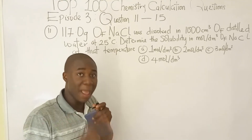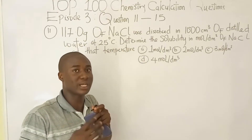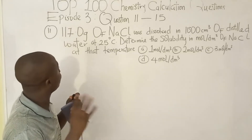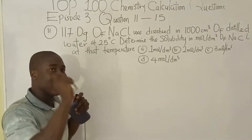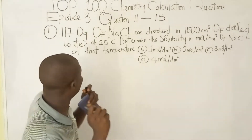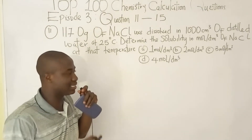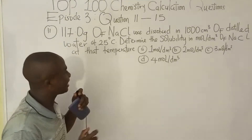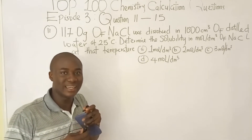Welcome back to the third episode in the series tagged 'Top 100 Chemistry Calculation Questions.' Question 11 says: 117.0 grams of NaCl was dissolved in 100 cm³ of distilled water at 25 degrees Celsius. Determine the solubility in moles per dm³ of NaCl at that temperature, which is 25 degrees Celsius.